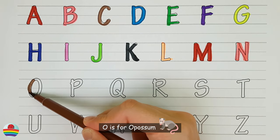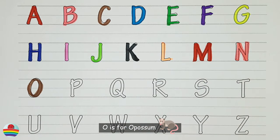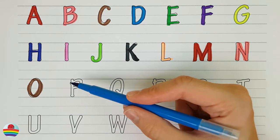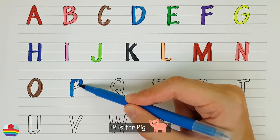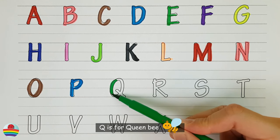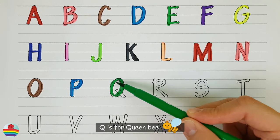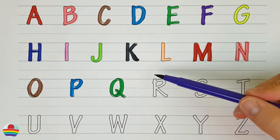O. O is for opossum. O. P. P is for pig. P. Q. Q is for queen bee. Q. R.